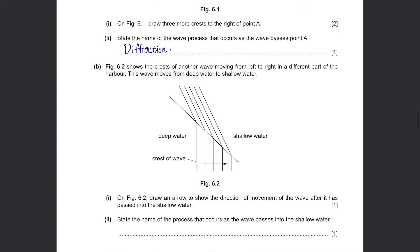Part B. Figure 6.2 shows the crests of another wave moving from left to right in a different part of the harbour. This wave moves from deep water to shallow water. If the depth of the water changes, it's refraction. On Figure 6.2, draw an arrow to show the direction of movement of the wave after it has passed into the shallow water. The direction of movement of the wave is perpendicular to the crest of the wave, like this. So our direction will be like this. State the name of the process as the wave passes into the shallow water. It's refraction.